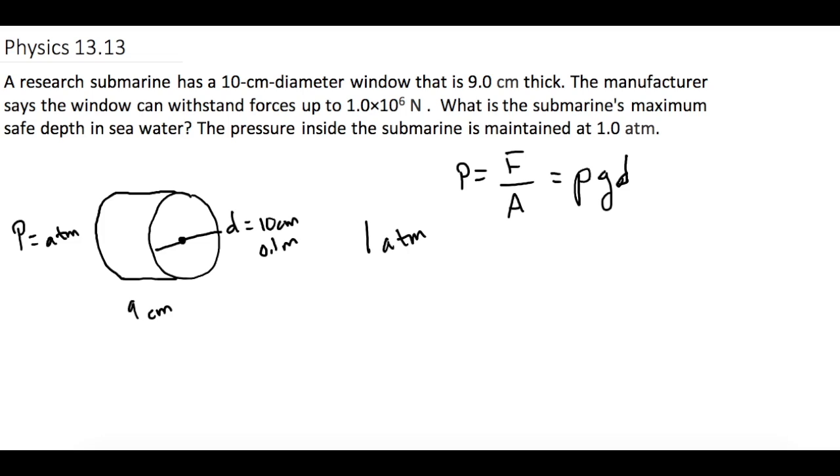We can use this relationship two ways. We could first figure out the maximum safe pressure. They tell us that F is equal to 1 times 10 to the 6 newtons, and we can figure out the area of the circle, which is pi times the radius squared. So the area of the circle is 0.00785 meters squared.